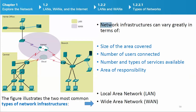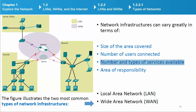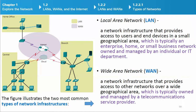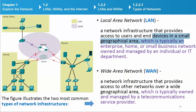Types of networks: Network infrastructures can vary greatly in terms of size of the area covered, number of users connected, number and types of services available, and area of responsibility. The two most common types of network infrastructures are: Local Area Network (LAN) — a network infrastructure that provides access to users and end devices in a small geographical area, typically an enterprise, home, or small business network owned and managed by an individual or a department.